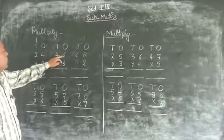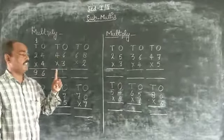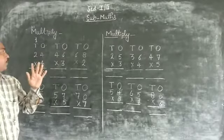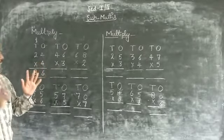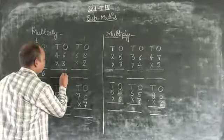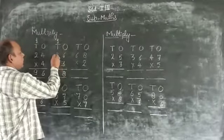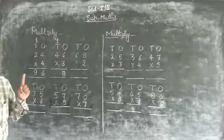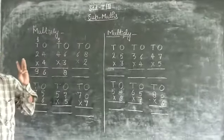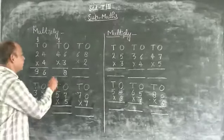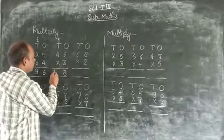3 times table 6: 3×1=3, 3×2=6, 3×3=9, 3×4=12, 3×5=15, 3×6=18. Write 8, carry 1. 3 times table 4: 3×1=3, 3×2=6, 3×3=9, 3×4=12. Write 12, carry 1. 12 plus 1 equals 13.